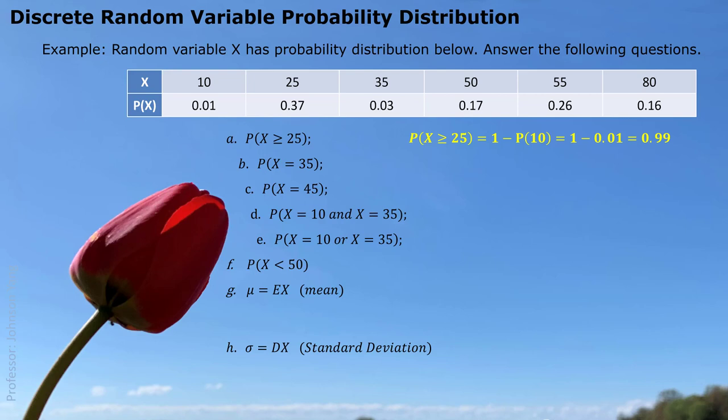Part B: probability x equals 35. The value is clearly listed in the table, so the answer is 3% for x to be 35. Part C: what's the probability x equals 45? When we look at the table, we do not see 45 listed as a possible value. That means 45 is not a possible value for x, so the probability x equals 45 is 0.